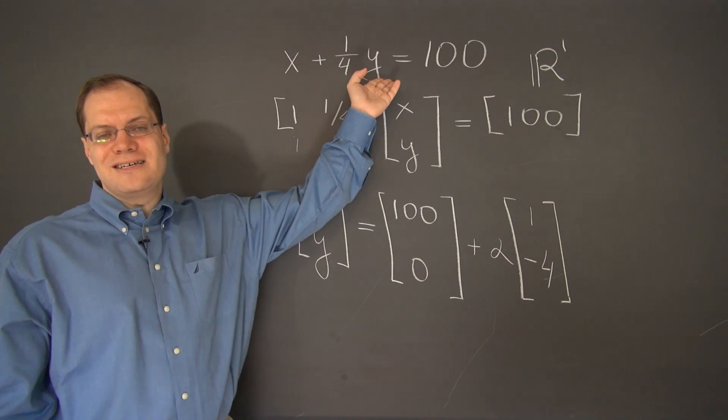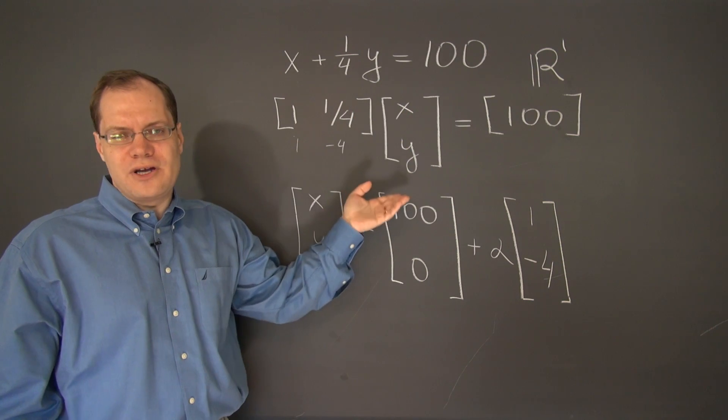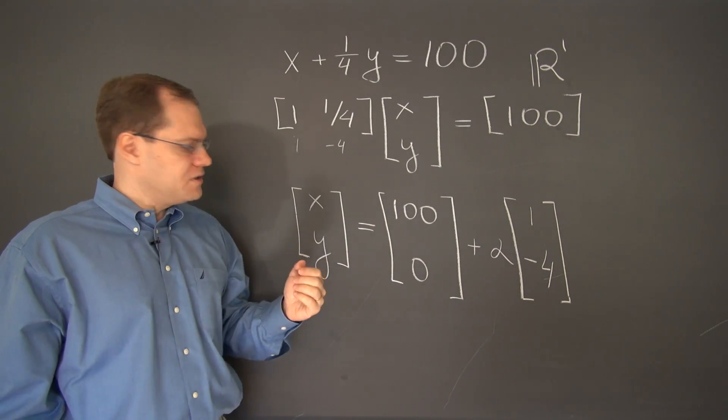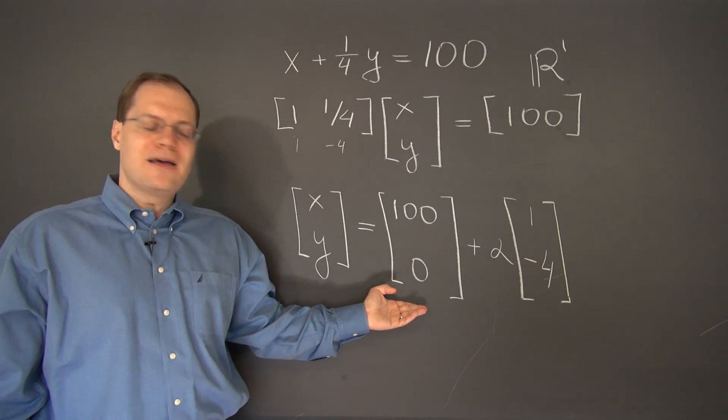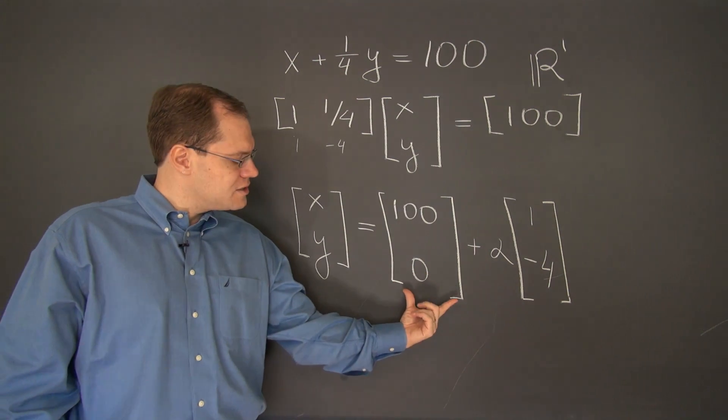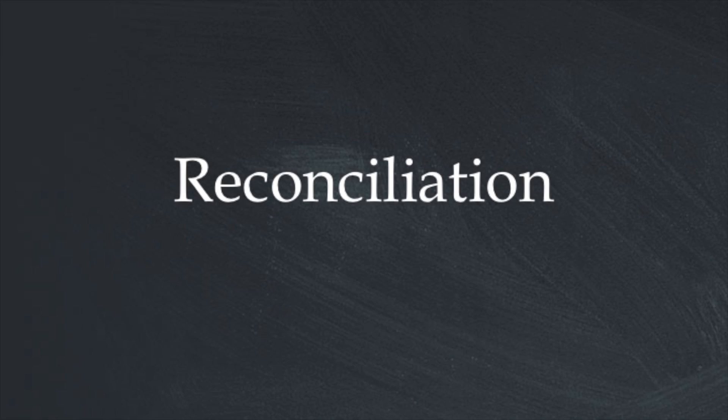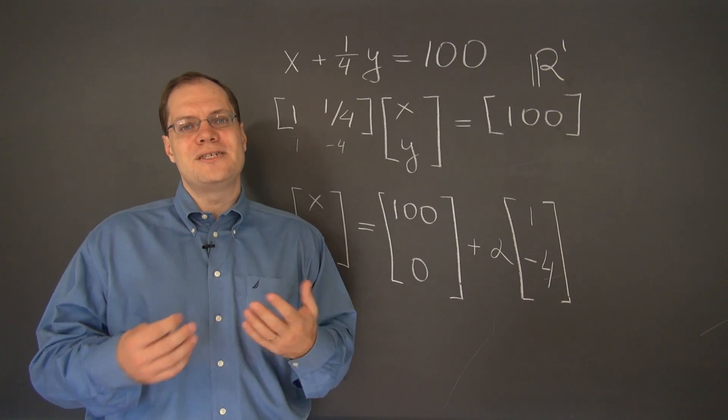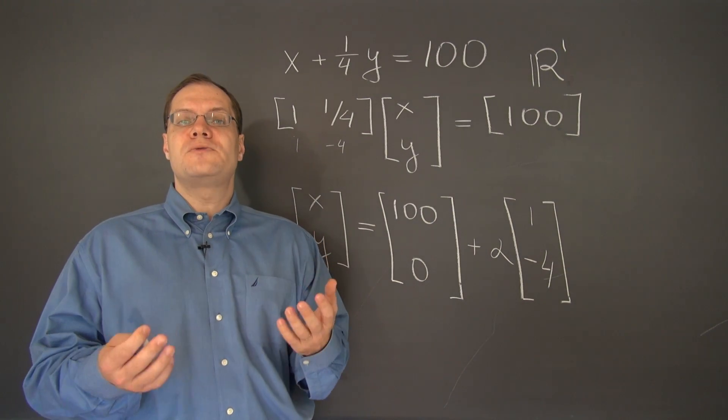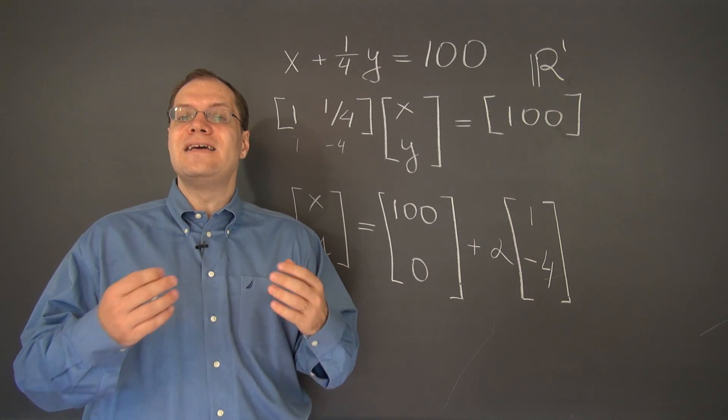The problem was exceedingly simple, but the framework remained intact and worked perfectly well. Now we have a general solution consisting of the particular solution in the null space. So let's just make sure that we're getting all of the same answers as we did just a few moments ago. The first one that we mentioned was 90, 40.